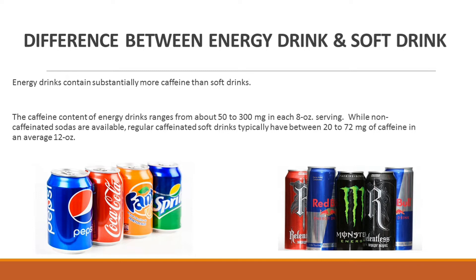Energy drinks contain substantially more caffeine than soft drinks. The caffeine content of energy drinks ranges from about 50 to 300 milligrams in each 8-ounce serving, while non-caffeinated sodas are also available. Regular caffeinated soft drinks typically have between 20 to 72 milligrams of caffeine in an average 12-ounce serving.